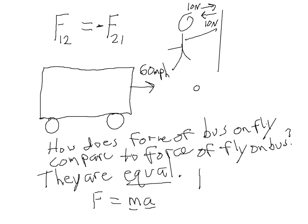In the case of the bus, you have some force equal to some huge mass — and because the mass is huge, you don't need a very big acceleration at all to produce that force. But for the fly, you have the same force magnitude, yet the fly has a tiny little mass and an enormous acceleration. In fact, that acceleration is so large that it tears apart the fly and it splats onto the bus's windshield.